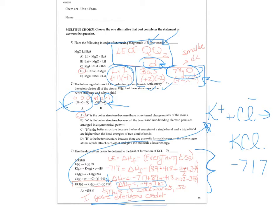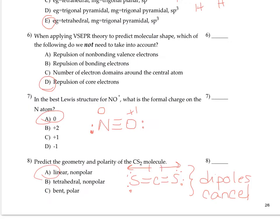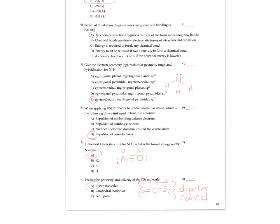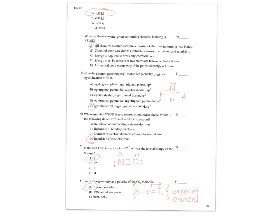The bottom line is I gave everyone credit on this question because of that. But if you'd like to see how it would properly be worked out, in case there's anything funky like this in the ACS final, this is the work. So the answer, the correct answer to that was minus 437 kilojoules. But again, I gave everybody credit for that one.